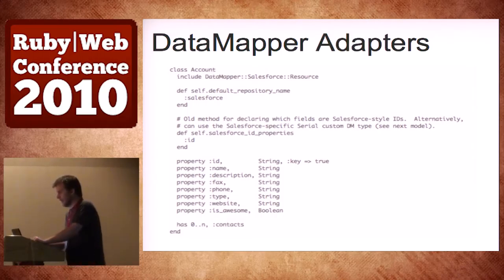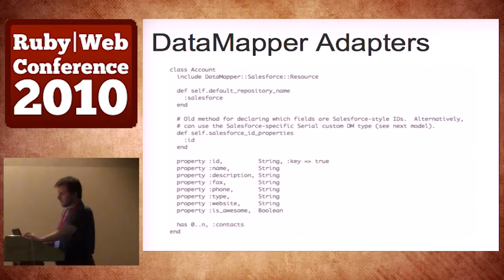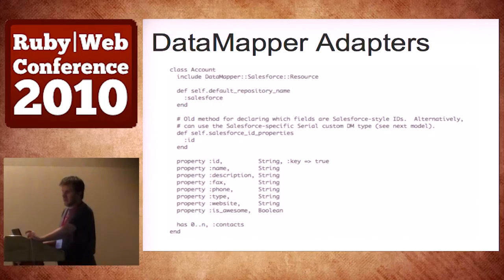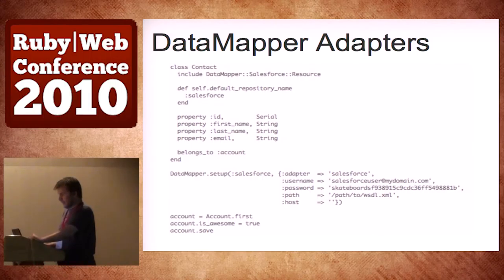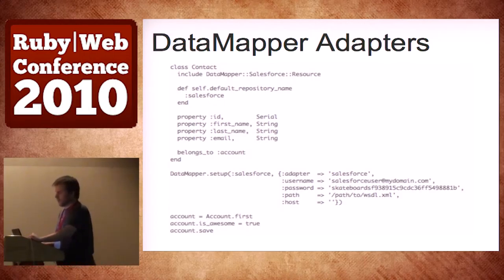Here's an adapter — DM Salesforce — written for Salesforce, which is an ERP-type CRM solution. It looks to you guys just like a regular DataMapper class. They set up the repository to use Salesforce, define just the properties they're interested in — Account and Contact — connect the contact to the account, and consume it just like it was in the database. This is a web service running like it's just part of your app. So it's like you wrote Salesforce. Really powerful.